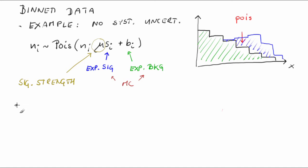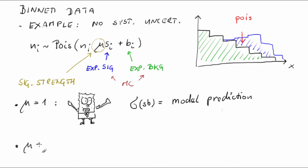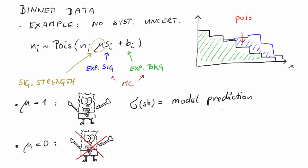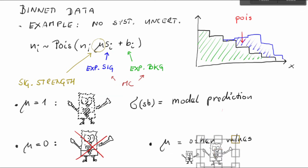The parameter mu is free and it scales the production cross-section of the signal — it is called signal strength. Each value of mu stands for some hypothesis. The most important hypothesis is mu equal to 1, which means: the Spongebob boson exists and its production cross-section is equal to the prediction of our favorite beyond-standard-model theory. Another prominent value is mu equal to 0, which stands for the hypothesis that the Spongebob boson does not exist. However, hypotheses where mu takes different values are tested too, as you will see in the next video.